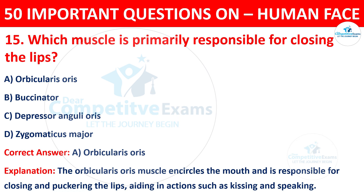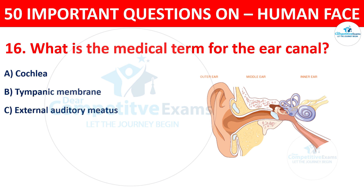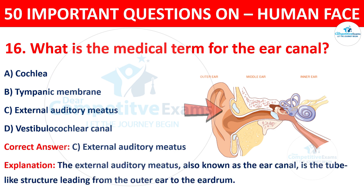Question number sixteen: what is the medical term for the ear canal? The options are cochlea, tympanic membrane, external auditory meatus, or vestibulocochlear canal. The correct answer is C, external auditory meatus. The external auditory meatus, also known as the ear canal, is the tube-like structure leading from the outer ear to the eardrum.